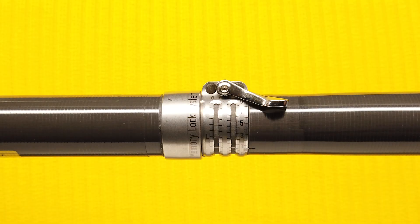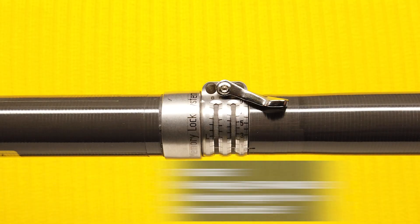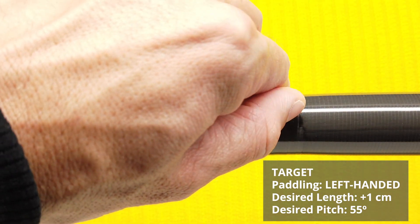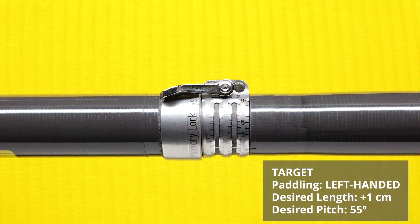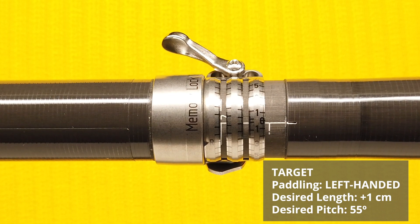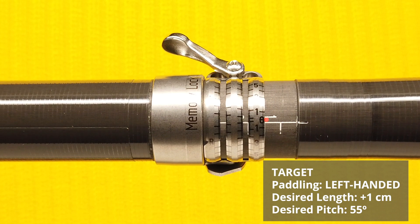So let's say I'm left-handed and I want the shaft to be 1cm longer at a 55-degree pitch. First, I lift the latch to loosen the adjuster. Now I'm pulling the shaft out until the base of the adjuster meets the 1cm mark.